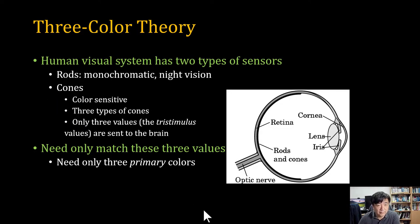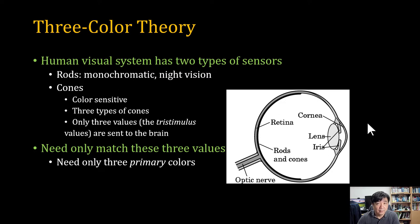I will shortly explain the human vision system. This is the model of the human eye. In the human eye there is a lens and the iris. The iris controls the brightness — the quantity of input light. In the retina there are two kinds of sensor cells. The first is the rod cell and the second is the cone cell. The rod cell senses brightness, and the cone cell is for sensing color.